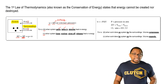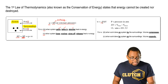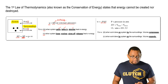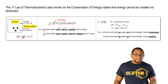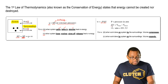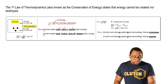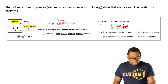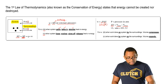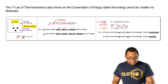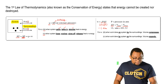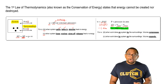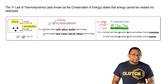W again equals work. It equals negative P times delta V. P here represents pressure in atmospheres. Delta V is my change in volume — that's equal to my final volume minus my initial volume. Based on the units involved, where pressure is in atmospheres and volume is in liters, our units at the end would be liters times atmospheres. You should remember this conversion factor: one liter times atmosphere equals 101.3 joules of energy.